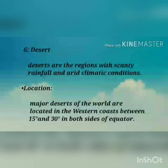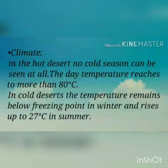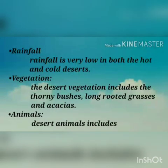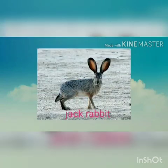The sixth and last region is desert. Deserts are regions with scanty rainfall and arid climatic conditions. Location: major deserts of the world are located on the western coast between 15 degrees and 30 degrees on both sides of the equator. Climate: in hot deserts, no cold seasons exist and day temperature exceeds 45 degrees centigrade. In cold deserts, temperature remains below freezing point in winter and rises up to 27 degrees centigrade in summer. Rainfall: rainfall is very low in both hot and cold deserts. Vegetation: desert vegetation includes thorny bushes, long-rooted grasses and acacias. Animals: desert animals include the kangaroo rat, coyote, jack rabbit and many lizards.